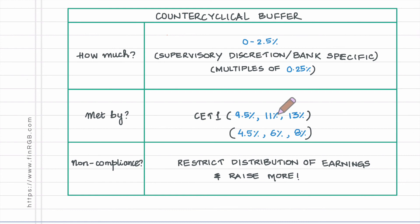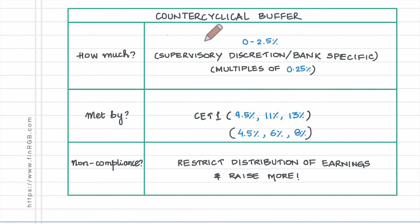The minimum becomes 11 percent for total tier one and 13 percent for total capital. As with the capital conservation buffer, any non-compliance with respect to the counter cyclical buffer would invite restrictions on the distributions of earnings and you will be forced to raise more capital.